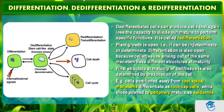De-differentiated cells produce cells that again lose the capacity to divide but mature to perform a specific function — this is re-differentiation. Plant growth is open, meaning it can be indeterminate or determinate. Differentiation is also open because cells and tissues arising from the same meristem have different structures at maturity. When induced by internal or external signals, a cell gets de-differentiated into a stem-cell-like state, and in later stages it re-differentiates.